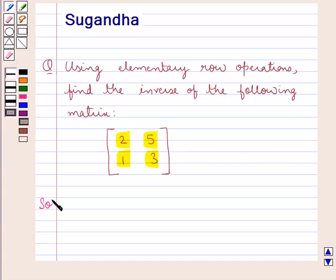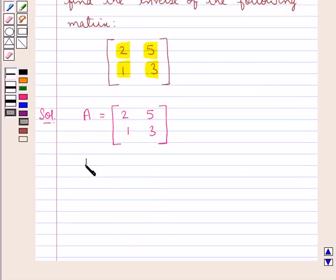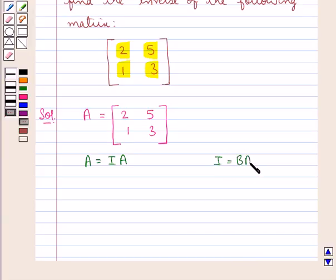Let's proceed with the solution now. Consider the given matrix as A. So matrix A is equal to the matrix with elements 2, 5, 1, 3. Now to find the inverse using elementary row operations, we will write this matrix A as IA and apply a sequence of row operations on A = IA till we get I = BA. And so this matrix B would be the inverse of matrix A.